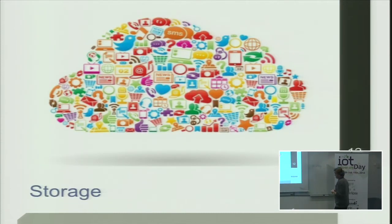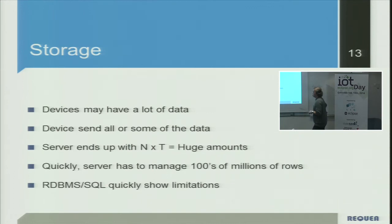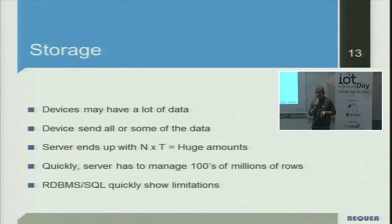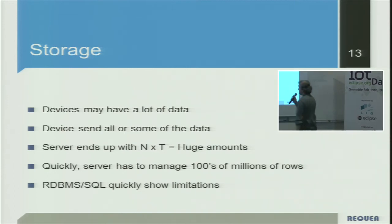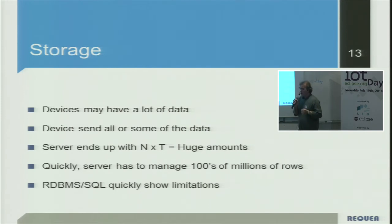Storage is a significant problem because all the data coming from devices ends up as a huge amount. You've got to plan for that. Very quickly you will end up with hundreds of millions of rows in storage, because every device sends a lot of data and there are a lot of devices — anywhere from hundreds to thousands to millions. With just 1.5 million meters sending a few data points per day, that's millions of rows every day to process. Databases quickly show limitations.